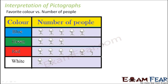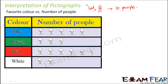So let us now see how we interpret pictographs. Here on the screen we have a pictograph showing favorite color versus number of people. We have four different colors — blue, green, red, and white — and we see how many people like each of these colors. Before we start interpreting, let me clearly state that each of these symbols represents 10 people. That is something we have already assumed, so let us proceed with this assumption.